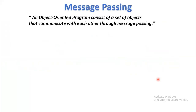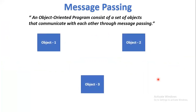The final principle is message passing. In object-oriented programming, there are a number of objects, and we can establish communication between them by sending and receiving messages — that is message passing. For example, with three objects: Object 1 wants to access Object 2's data, so it needs to send a message to Object 2. Likewise, Object 2 can send and receive messages from Object 1 and Object 3. Through message passing, objects can communicate with each other in OOP.